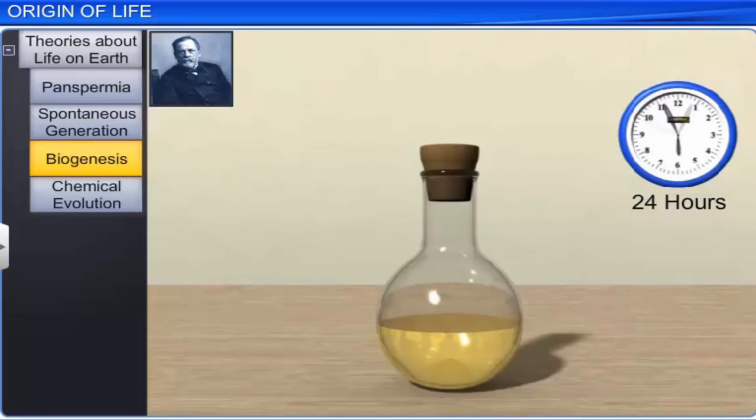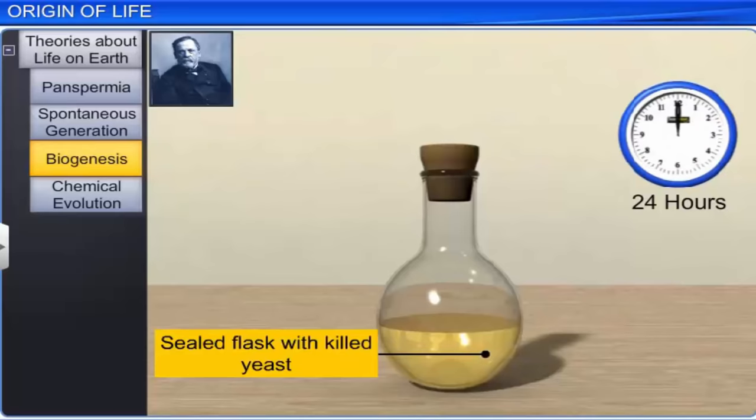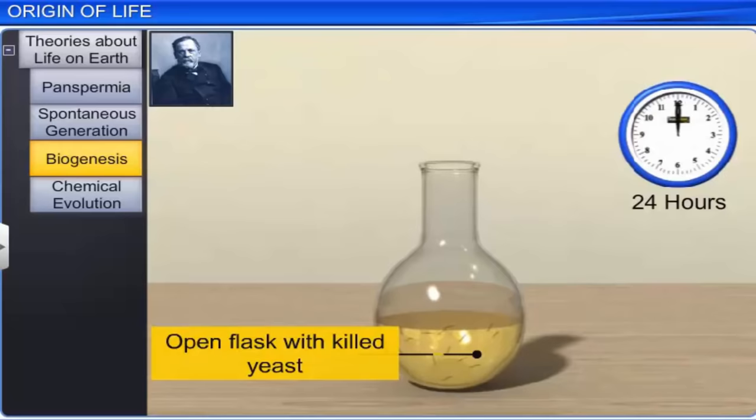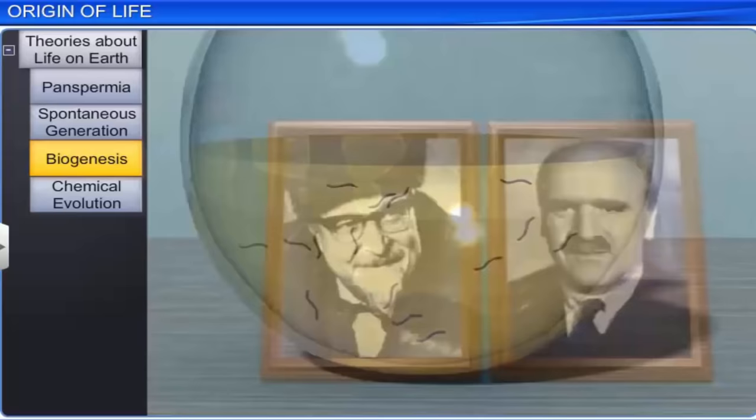In his experiment, Pasteur used pre-sterilized sealed flasks with killed yeast. These flasks did not show any signs of life. On the contrary, in another flask, he exposed killed yeast to air. Surprisingly, living organisms were found in this flask.